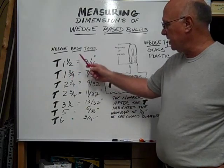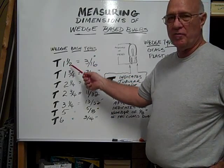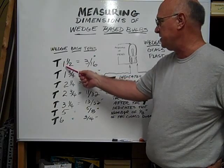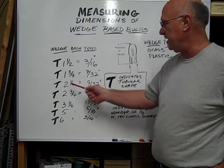So if this is actually a T two, it would be a quarter of an inch, or two eighths. But this is a T one and a half, which is equal to three sixteenths.